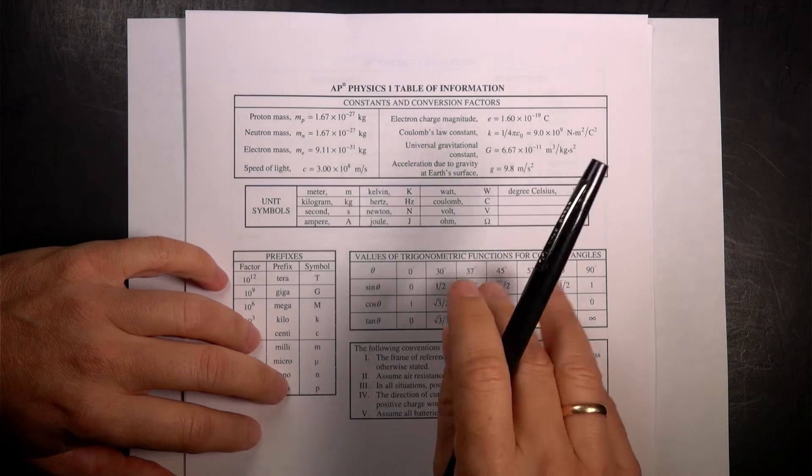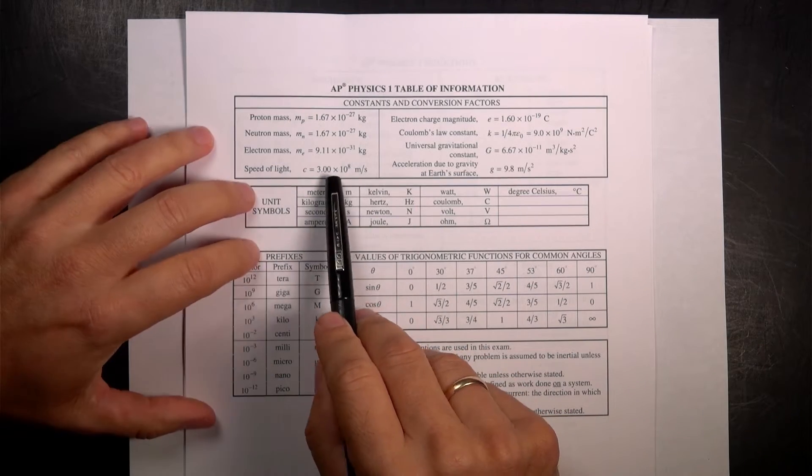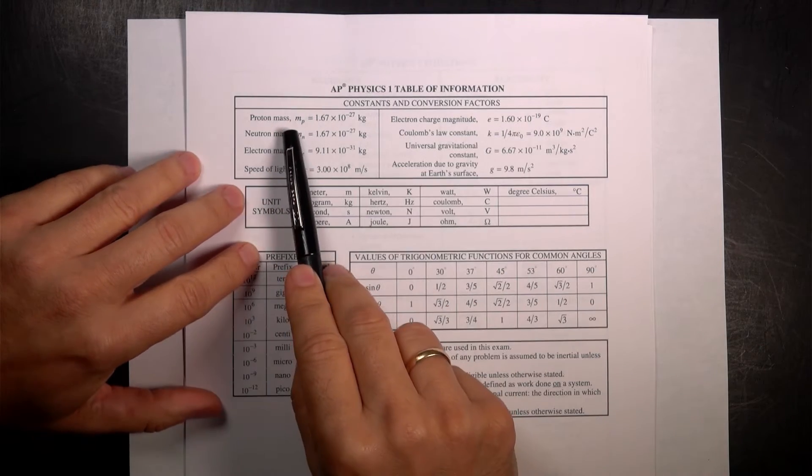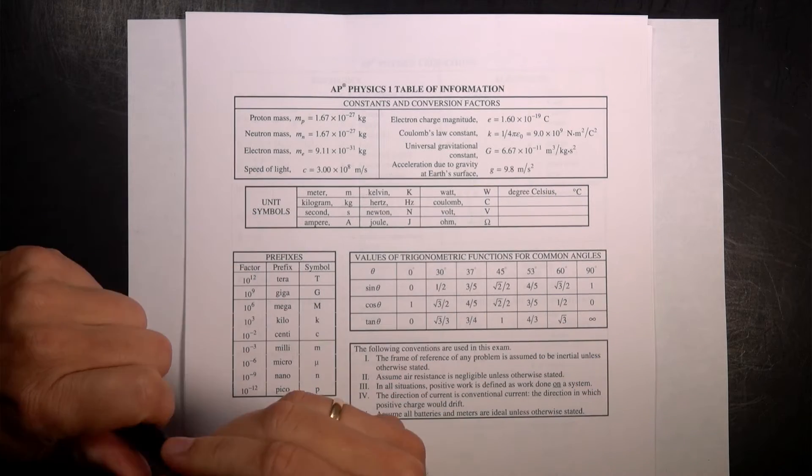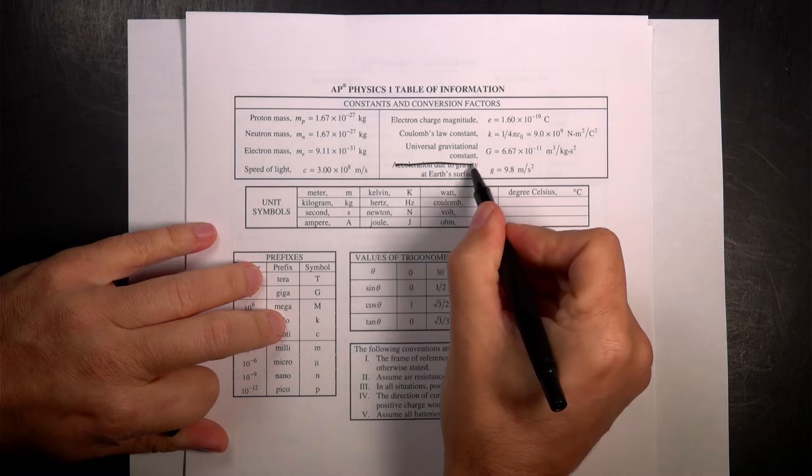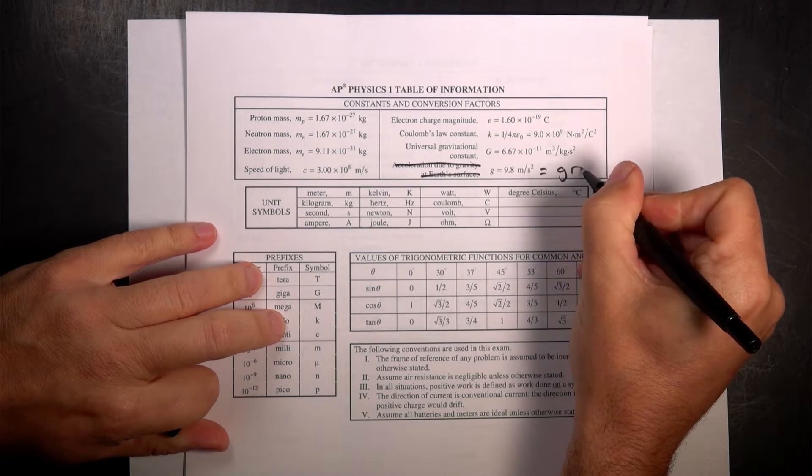So this sheet isn't actually very important, but I don't think there's anything to explain. This is just a lot of constants: proton mass, neutron mass, speed of light. Oh, I would change this. Acceleration due to gravity or surface, it's not bad, but I would call that gravitational field.